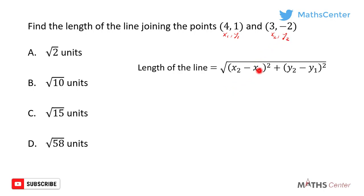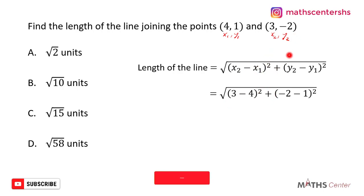So all we'll do here is substitute the values into the formula. x2 is 3, x1 is 4, so x2 minus x1 gives us (3 - 4)². Then plus y2 is -2, y1 is 1, so you'll have (-2 - 1)².